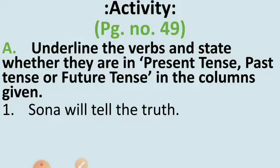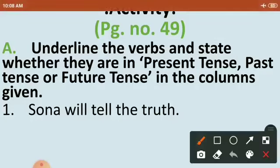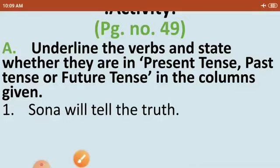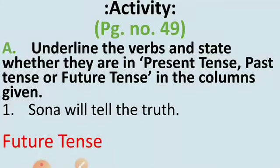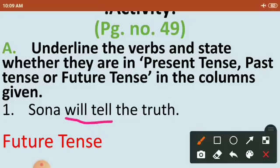There are 8 sentences in Activity A and we are going to solve a few of them. First sentence: Sona will tell the truth. We have to underline the verb first. The action word is 'tell,' but with it there is also a helping verb. So we will underline both — 'will tell' is the verb. Now, which tense is it? It is future tense. This sentence is in future tense, and the verb we have underlined is 'will tell.'